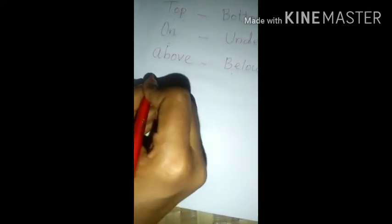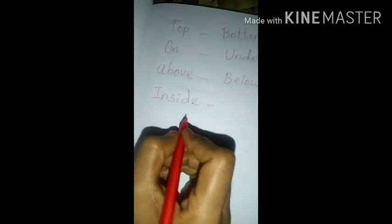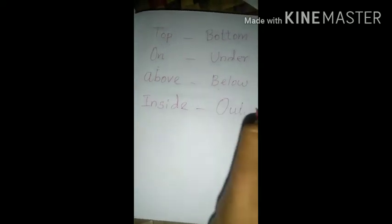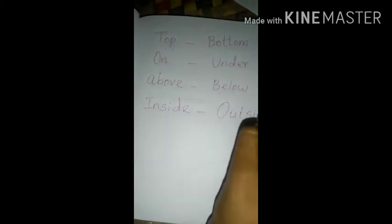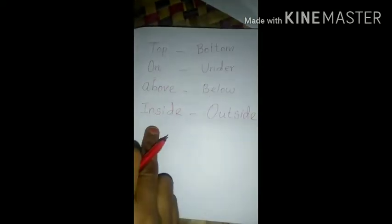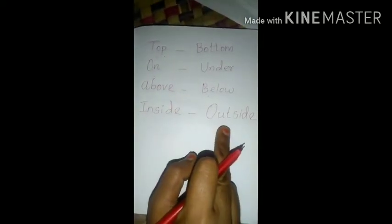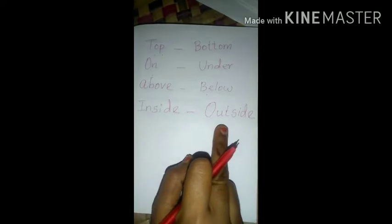Then 'inside' — I-N-S-I-D-E. I think all of you know this. Inside means ullye. 'Outside' — O-U-T-S-I-D-E — means veli-a. Inside means ullye, outside means veli-a.